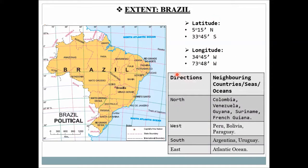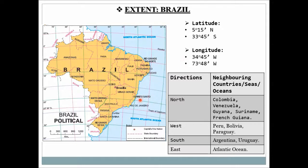Brazil's neighboring countries: in the north, Brazil borders Colombia, Venezuela, Guyana, Suriname, and French Guiana. In the western part, it borders Peru, Bolivia, and Paraguay. In the southern part, it borders Argentina and Uruguay. In the eastern part, Brazil faces the Atlantic Ocean — which is sometimes divided into the North Atlantic Ocean and South Atlantic Ocean — and both parts are at the eastern side of the Brazilian map.